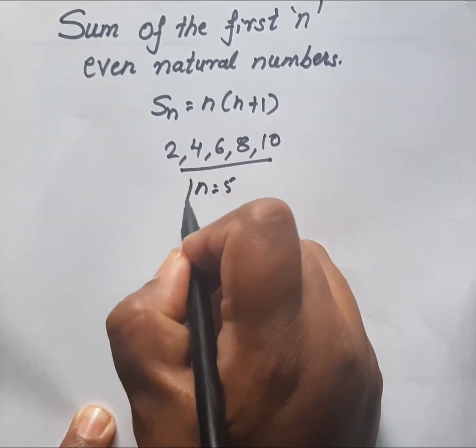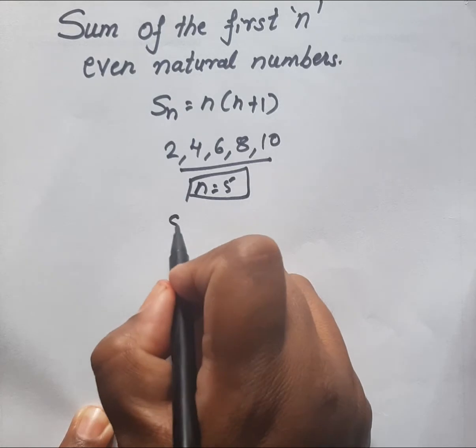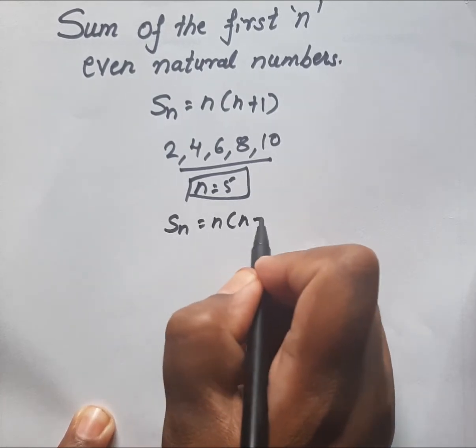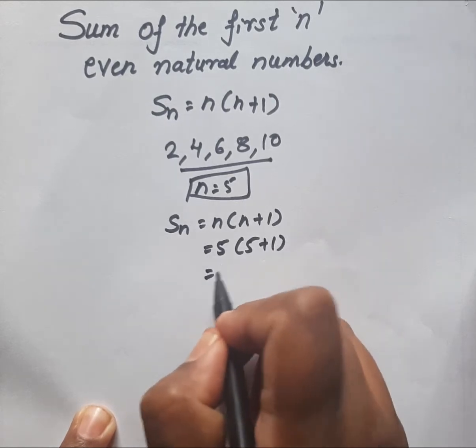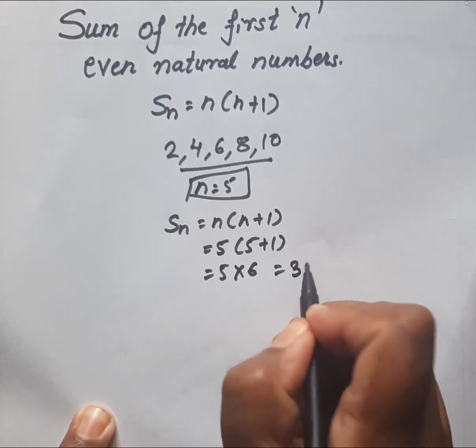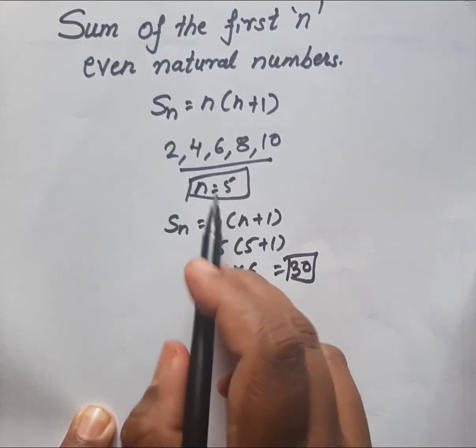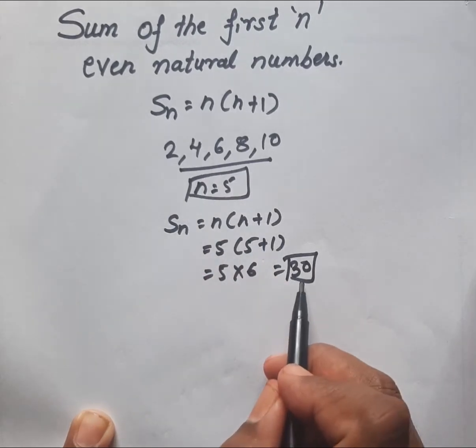That is, n is equal to 5. Our formula is Sn equals n bracket n plus 1, that is 5 times 5 plus 1 equals 5 multiplied by 6 equals 30. The sum of the first 5 even natural numbers is 30.